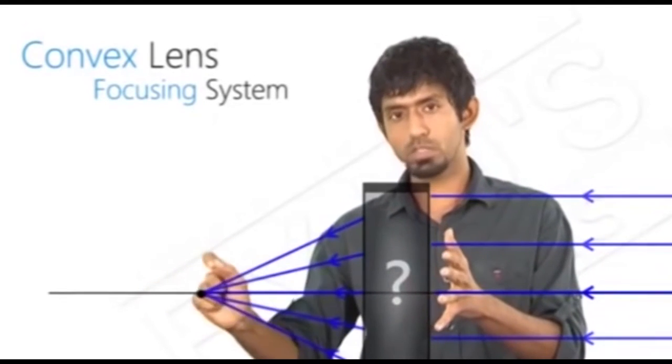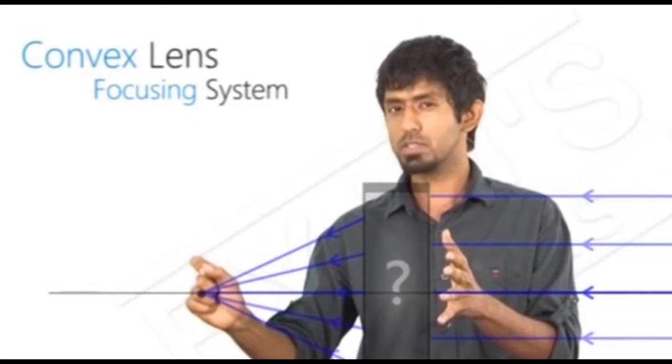So whenever we have what's called a focusing system, what's really happening? Lots of rays are getting focused onto one single point. Now, let us see if we can try and explain this in a way that probably you wouldn't see anywhere else. Let's ask this question.